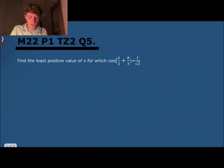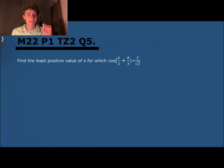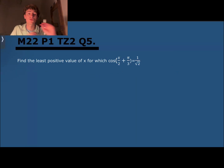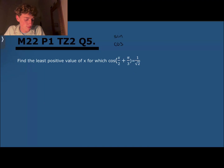The next question asks: find the least positive value of x for which cosine equals 1 over root 2. For this, you need to remember some cosine values — that's true in Math A. You can use a table: write sine and cosine, then the fundamental angles 0, 30, 45, 60, and 90.